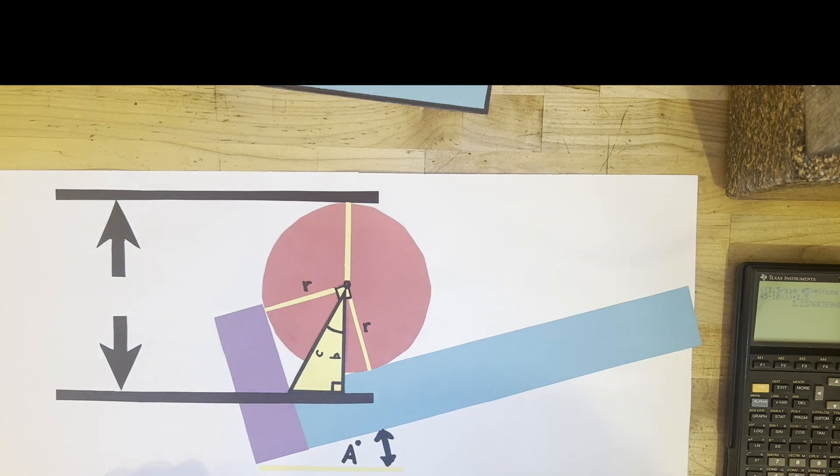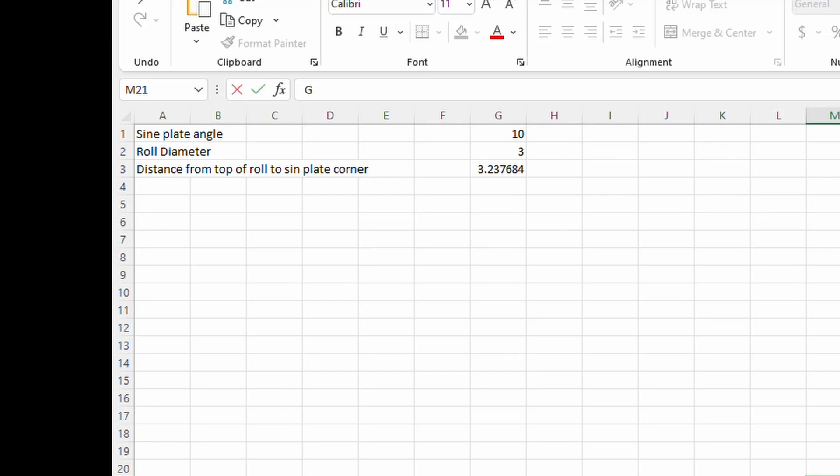You can also build this out in Excel and it's pretty basic. We'll just plug in that equation we used earlier, so G2 is the roll diameter, so half of that's our radius divided by the sine of 45, and then we multiply that by the cosine of 45 minus the sine plate angle, and then we add one radius. Exactly what we plugged into the calculator just formatted for Excel a little. Easy enough to build in some spreadsheet. We could try 15 and a quarter inch roll, pretty painless to do it this way also.